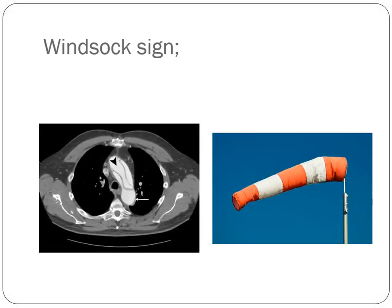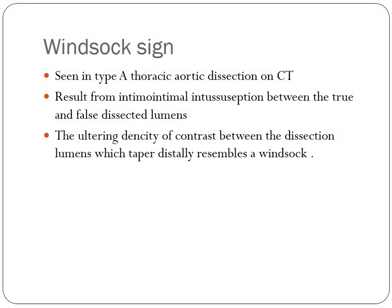The windsock sign is seen in type A thoracic aortic dissection on CT. Type A affects the ascending aorta, aortic arch, and descending aorta. It results from intimal interception between the true and false dissected lumen. The alternating density of contrast between the dissected lumens, which tapers distally, resembles a windsock.